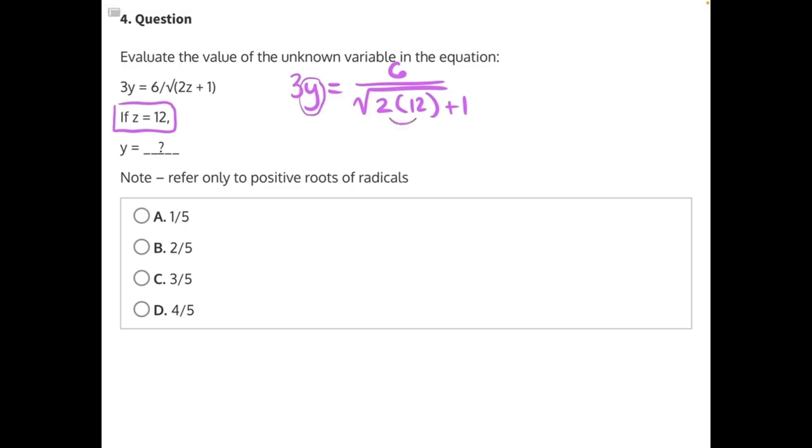So first we need to resolve 2 times 12, which would give us 24. And then that plus 1 stays. Then 24 plus 1 would give us 25.